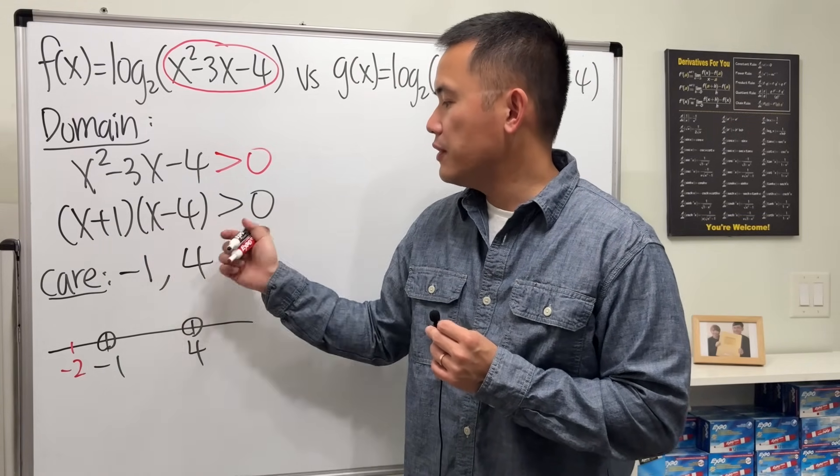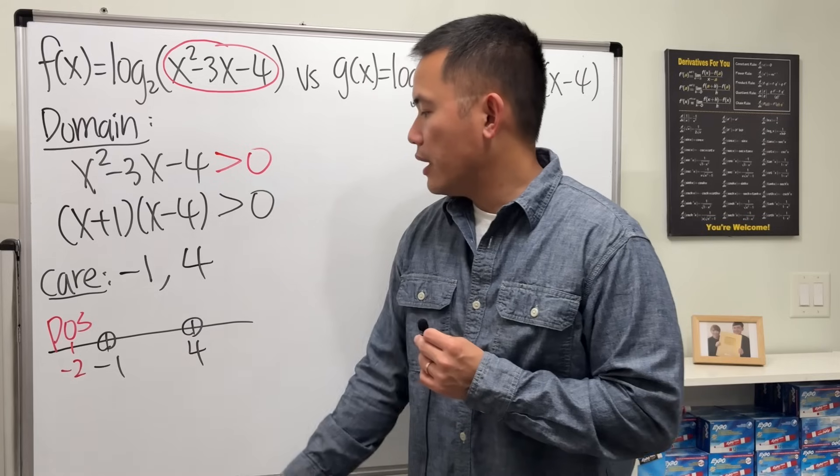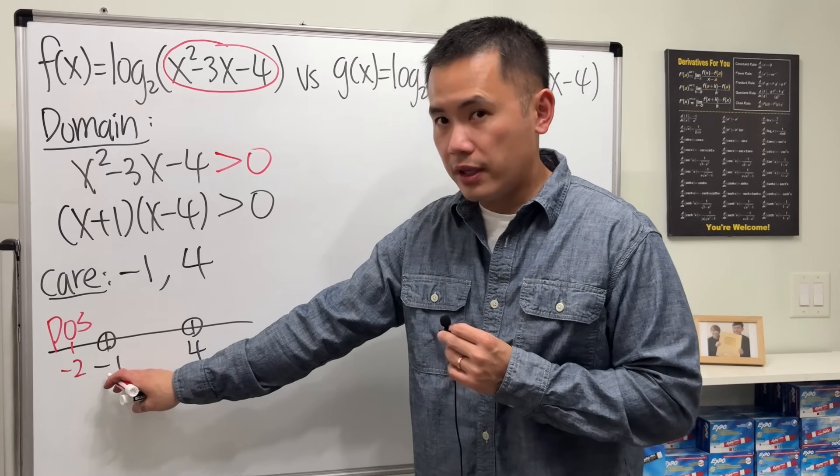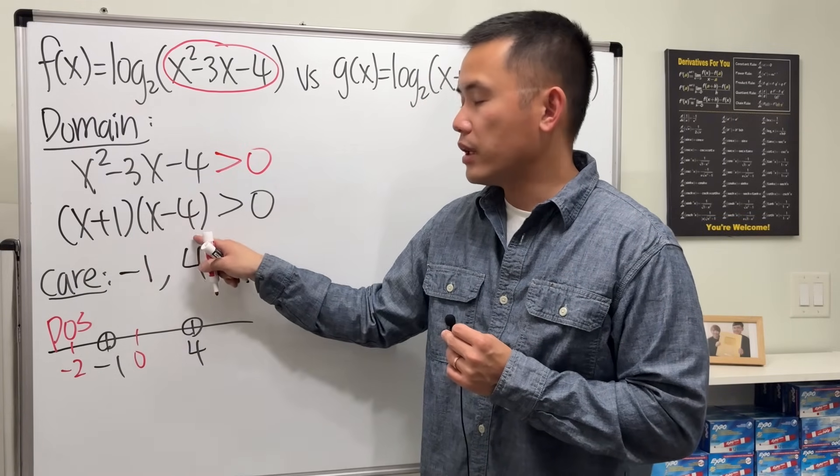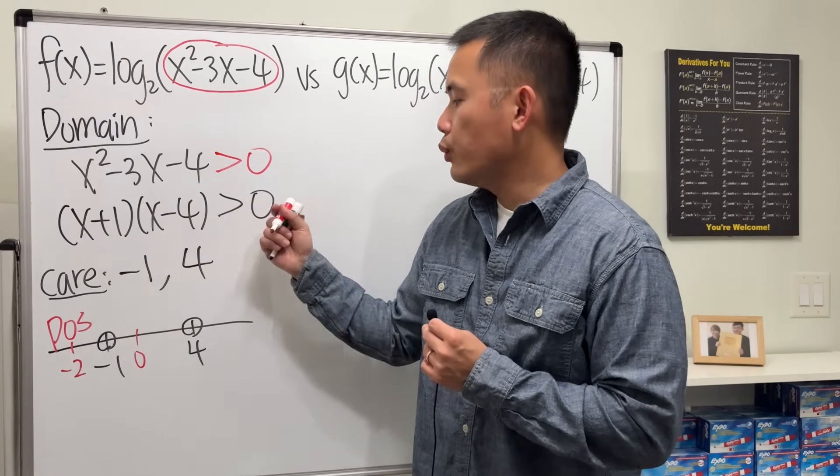Negative times negative, we will end up with positive results. And then pick a number in between negative 1 and 4, that's say 0. Put it here we get 1, put it here we get negative 4, multiply we get negative. Negative.